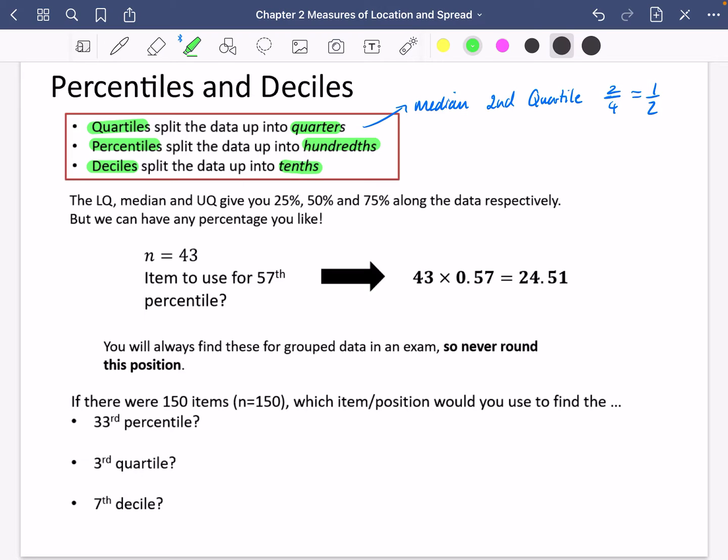The lower quartile, median, and upper quartile give you 25%, 50%, and 75% along the data respectively. But we can actually have any percentage that you like.